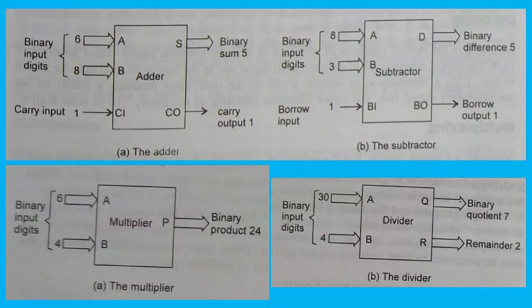The arithmetic operation of subtraction can be performed by a digital logic circuit called the subtractor. Its function is to subtract subtrahend A from minuend B, considering the borrow input Bi, and to generate a difference term D and a borrow output term Bo. Since subtraction is equivalent to addition of a negative number, subtraction can be performed using an adder. Figure b is a block diagram of a subtractor.